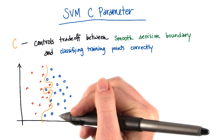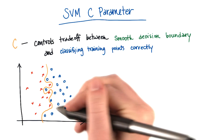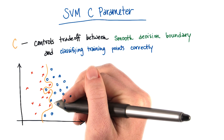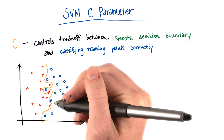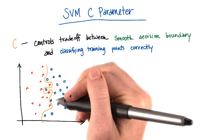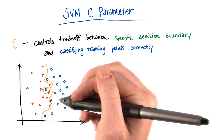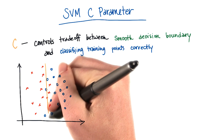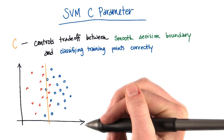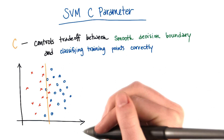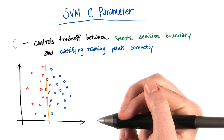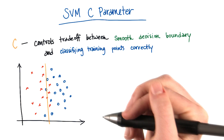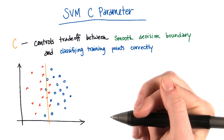Of course, the tradeoff of having something that's very intricate, very complicated like this, is that chances are it's not going to generalize quite as well to your test set. So something that's a little bit straighter, a little bit more straightforward, may actually be the better choice once you start looking at the accuracy on your test set.